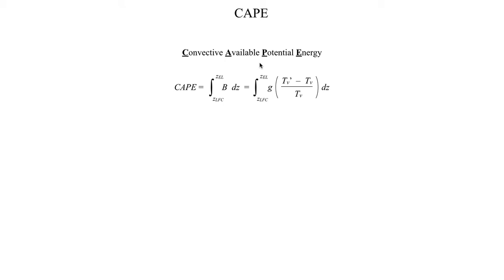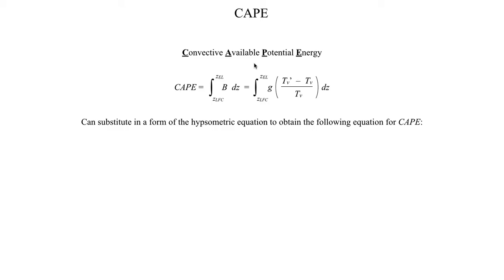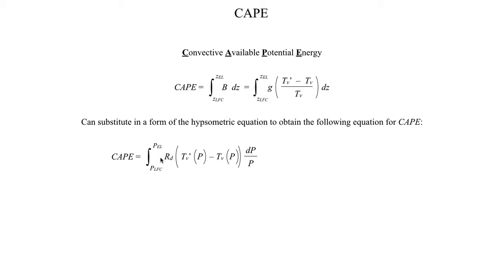A more desirable form of the equation involves using pressure as the vertical coordinate instead of height. Using a form of the hypsometric equation, we can do some algebra to rewrite the CAPE equation. Now the CAPE integral runs from the pressure level of the level of free convection up to the pressure of the equilibrium level, which in a given atmosphere is usually around 200 millibars — sometimes as low as 300 millibars or as high as 100 millibars — and we no longer have the denominator, making the integral easier to evaluate.